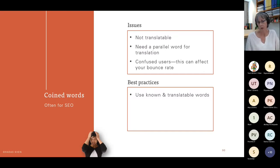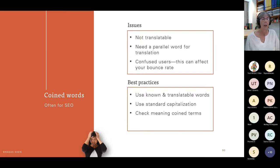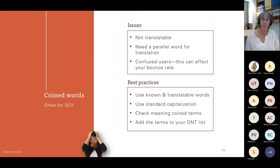Capitalization: German capitalizes nouns, so if you're capitalizing to make words stand out, they won't. French, on the other hand, does not capitalize nouns, so yours will just look like a mistake. Coined terms: you really need to check that they don't have a meaning in another language. And if you're using them, make sure they're added to your do-not-translate list.